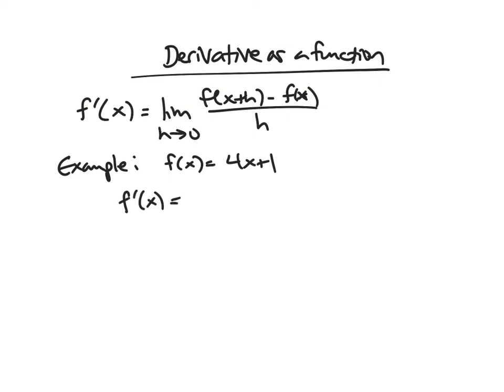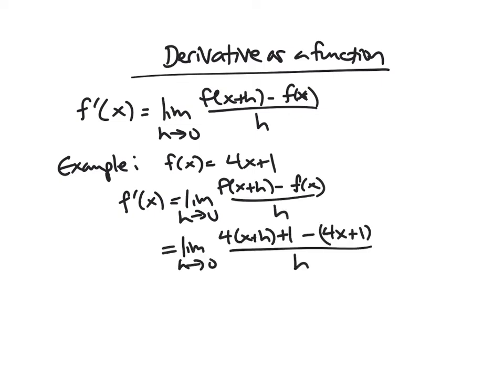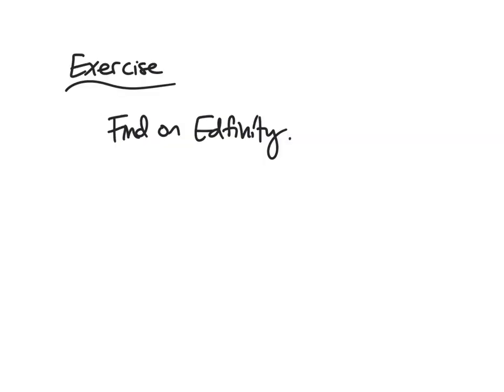So f prime of x is the limit as h approaches 0 of f of x plus h minus f of x over h. I get 4 times x plus h plus 1 minus the quantity 4x plus 1. So this is 4x plus 4h. My 4x's are going to cancel. My 1's are going to cancel. And I just get 4h over h. And that's just going to be 4.